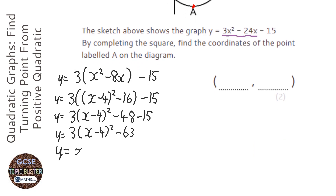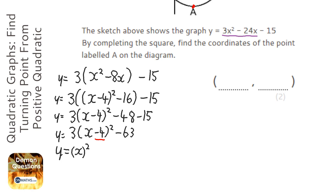In y equals x squared it's just x that's squared, but here it's x minus 4 that's squared — we're taking away 4 from within the function. Anything inside the function affects the x. If you know about graph transformations, minus 4 within the function will move it right 4, so the turning point will be at x equals 4.